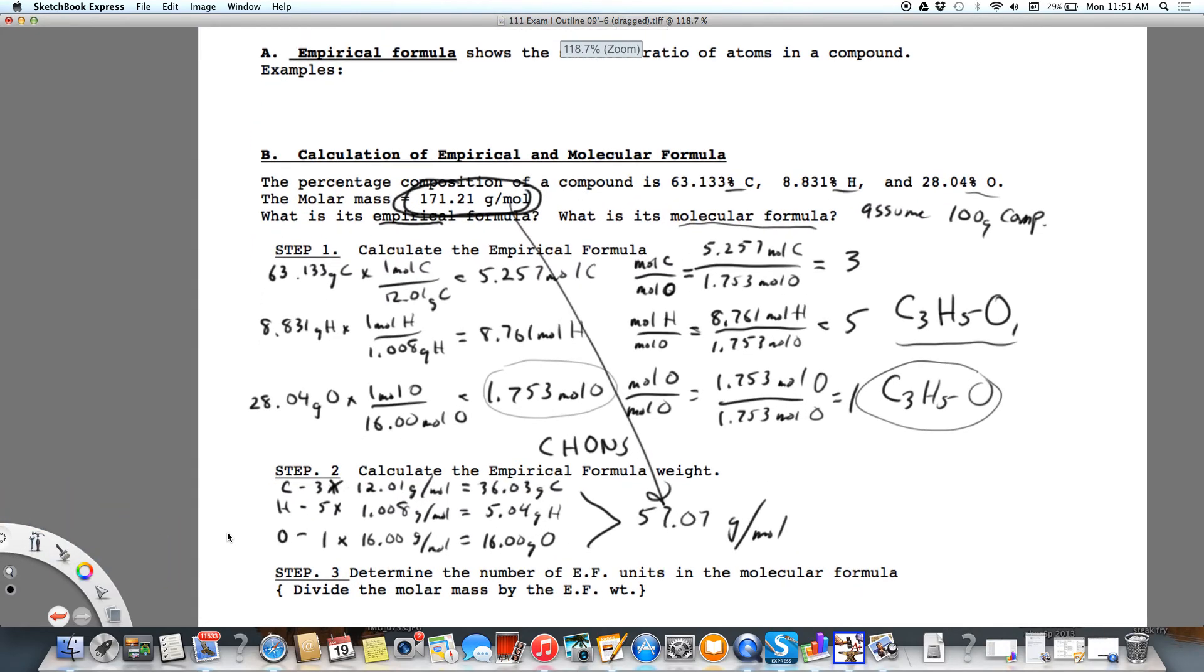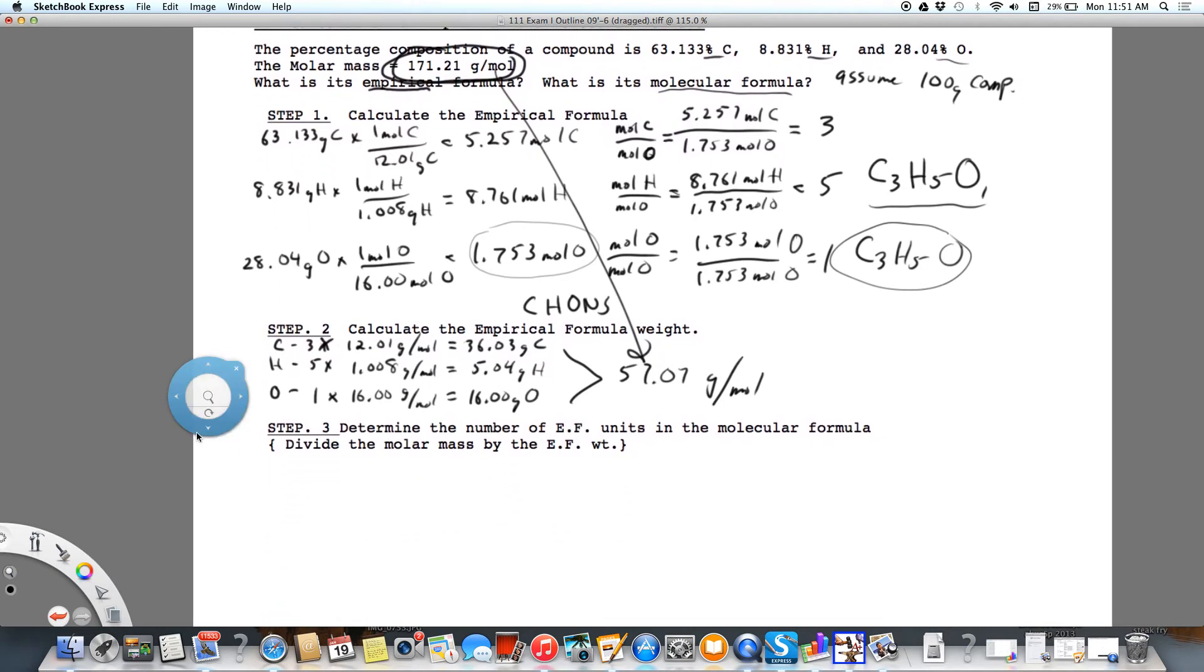So now what I'm going to do is I'm going to divide the molecular formula weight by the empirical formula weight, and it better be a whole number. Otherwise you did this wrong. So that's going to equal 171.21 grams per mole divided by 57.07 grams per mole. And when you do that, we do get a whole number and it's three. That's a good sign. That means we did this right. It must be a whole number.